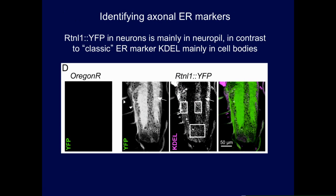The problem we struggled with for quite a while was seeing ER in axons. Using KDEL as a marker, there's plenty of staining in cell bodies but not much in the neuropil. We found similar results for most so-called ER markers, until it occurred to us we were looking at the wrong markers. Most proteins people call ER markers are markers of protein export, protein traffic, and protein folding — really rough ER. When you start looking for markers of smooth ER or tubular ER, they go very strongly into axons.